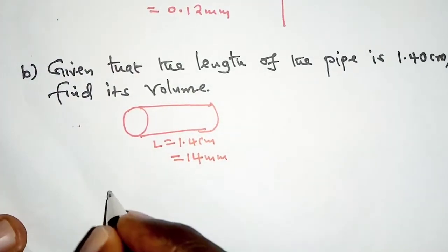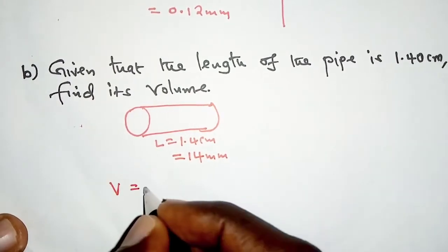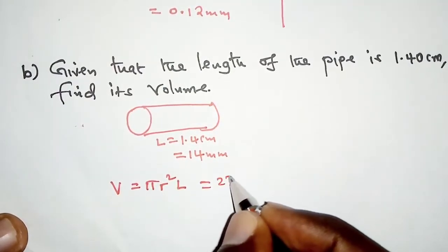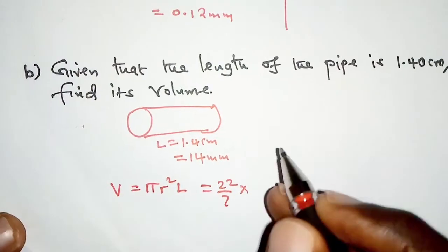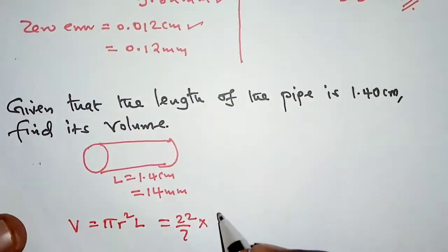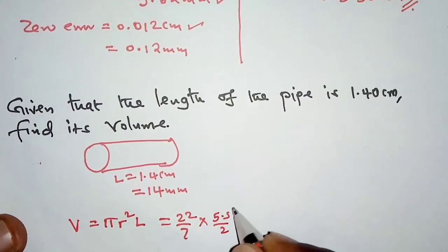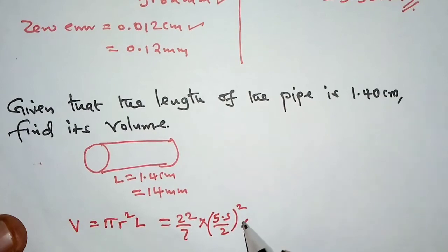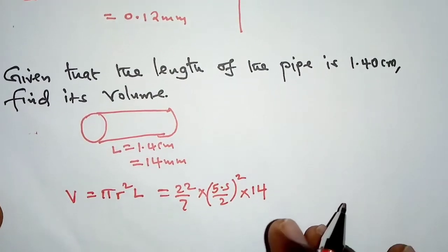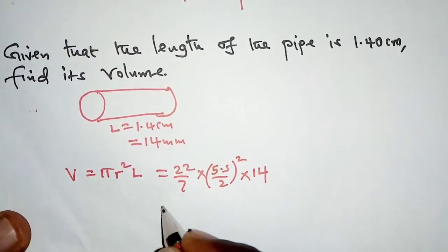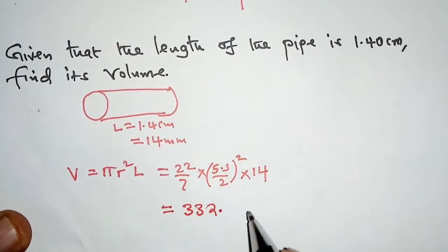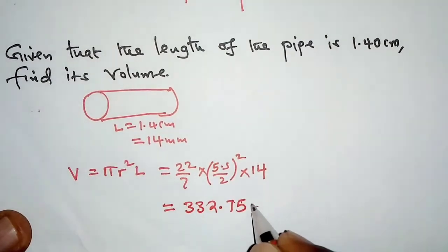At this point, volume is given by πr² times the length. That means we'll have 22 over 7 times the radius. Radius, we take the diameter we already got, 5.50 divided by 2, then we square, and then we multiply by this length, 14. When we work this out from my calculator, I get 332.75 cubic millimeters.